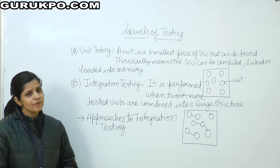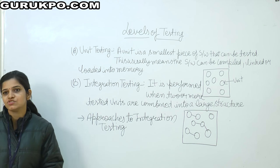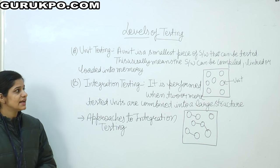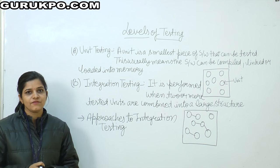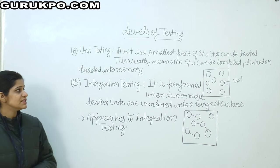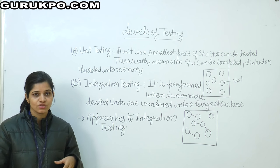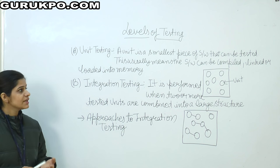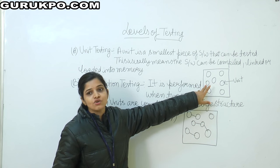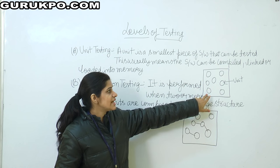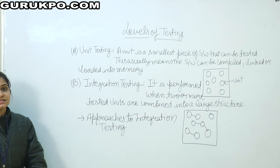Then, levels of testing — there are many types of levels in testing. Firstly I define unit testing. A unit is the smallest piece of software that can be tested. This usually means the software can be compiled, linked, or loaded into memory. So this diagram shows unit testing — this smallest piece is called a unit. Firstly, this unit is tested in software, then compiled and linked into memory.